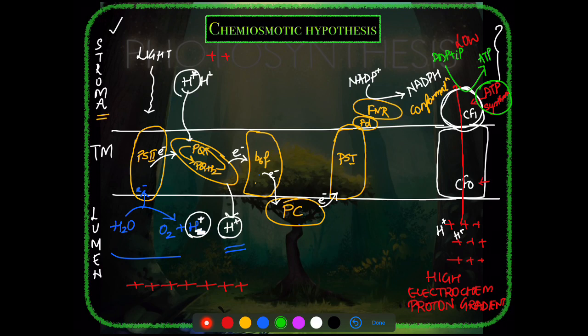The chemiosmotic hypothesis involves a proton gradient leading to ATP production — the same principle as in mitochondrial respiratory ETS. The non-cyclic photophosphorylation is represented with the thylakoid membrane (stroma outside, lumen inside). PS2 traps light energy, the electron moves to Plastoquinone. Simultaneously, photolysis of water replenishes PS2's electron and adds protons to the lumen.